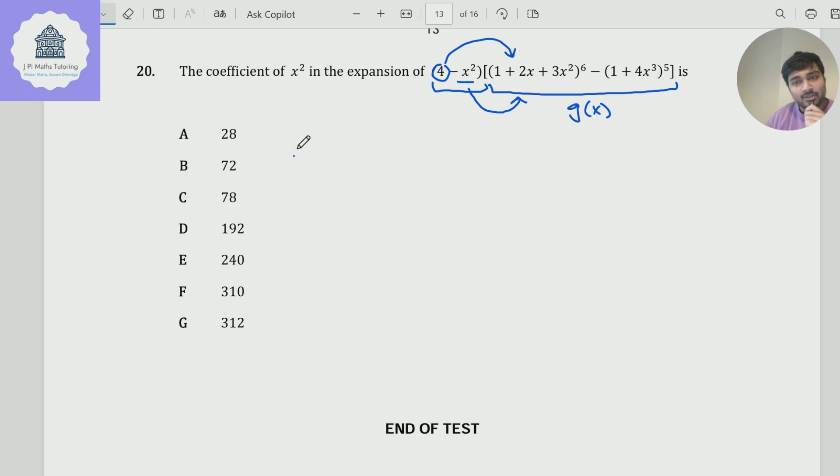Let's start with the constant term of g(x), the coefficient of x⁰ in g(x). Well, what is that? The only way I can get a constant from g(x) is by taking the constant from this term, which is 1⁶, and then taking the constant in this term, which is 1⁵. And that, of course, just gives me zero. So that's quite nice. There's no constant term in g(x).